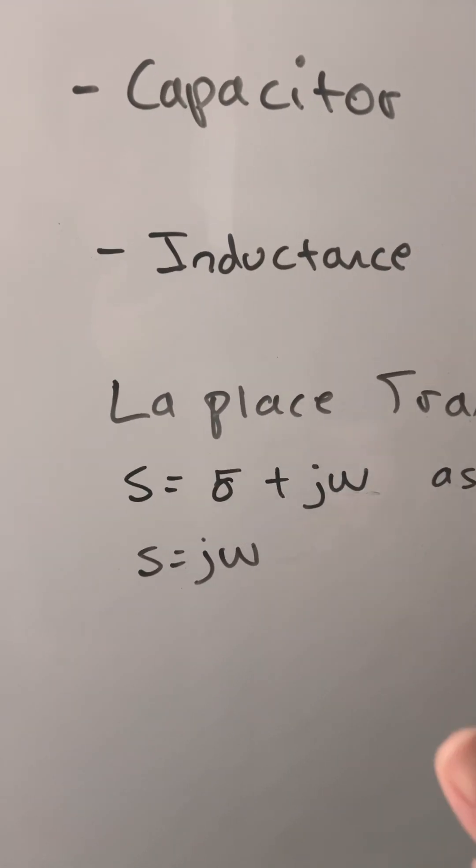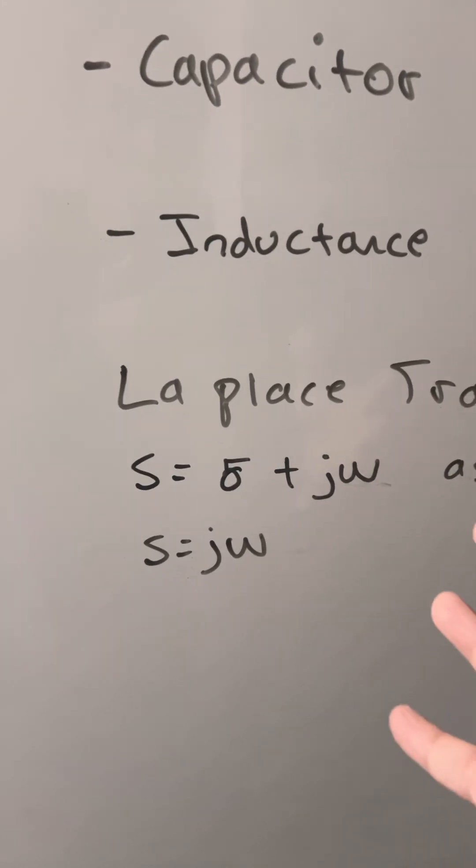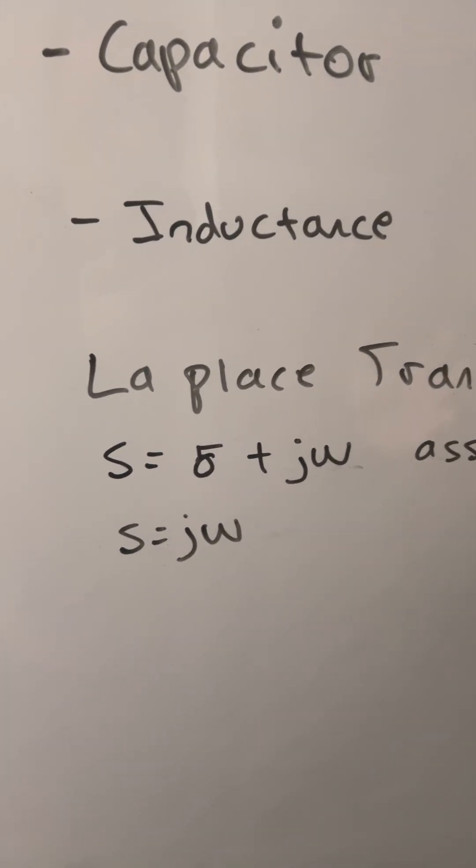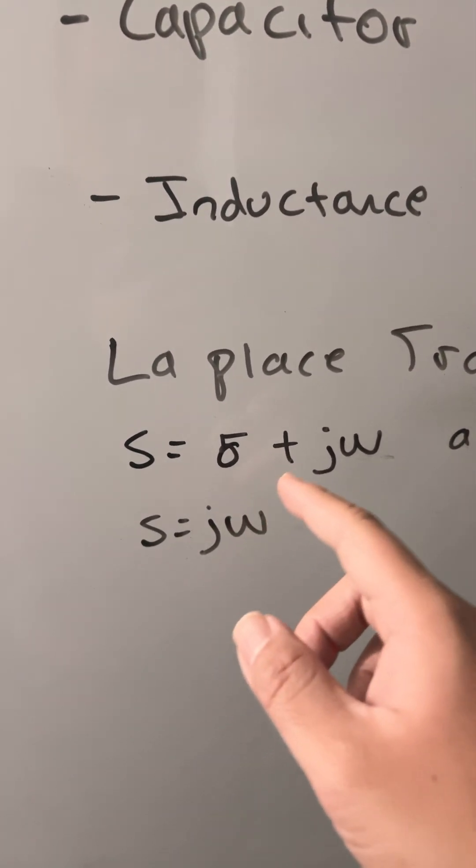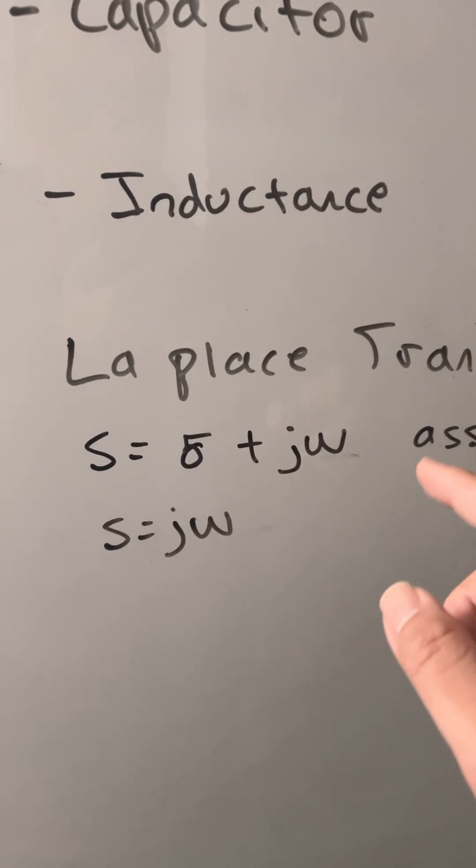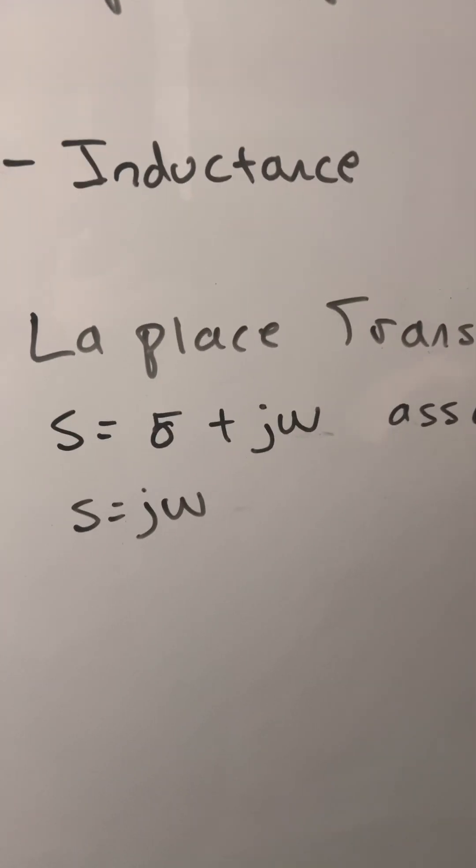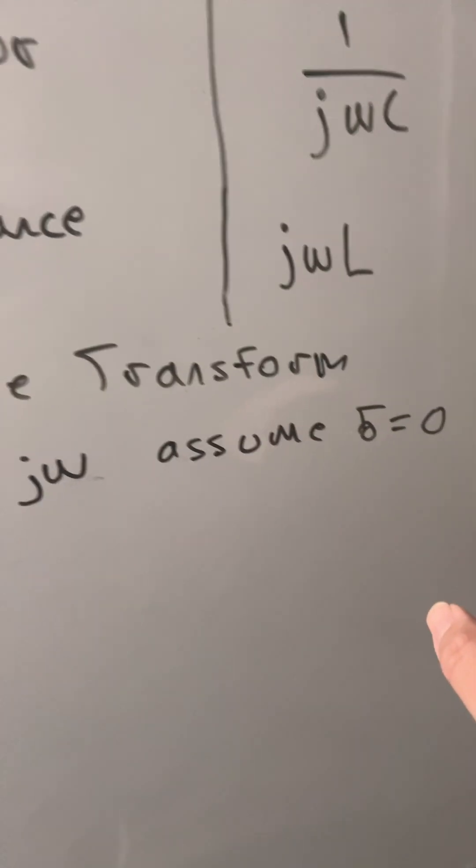So we're going to use this and use the Laplace transform. So S equals sigma plus j omega. We're going to assume sigma equals 0,